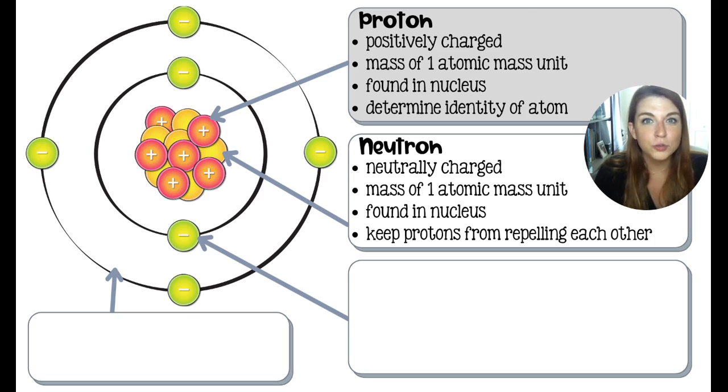Next up, we have neutrons. Neutrons are neutral. They have no charge at all. They are roughly the same mass of a proton. But we say that they have a mass of one atomic mass unit. If you ask a physicist to measure it in kilograms, it's slightly different. But chemists say they're roughly the same.